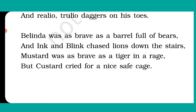Here the poet explains the inner strength and bravery of various characters. Valinda was as brave as a group of bears, and Ink and Blink were so brave they could hunt a lion. The dog was very brave, just like an angry tiger. But in contrast to all of them was Custard — the dragon was not brave. He was so afraid of everything that he always demanded a safe cage.